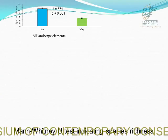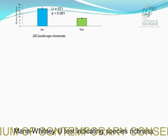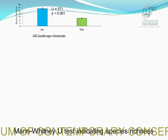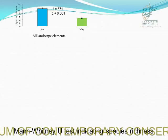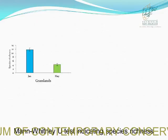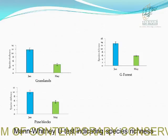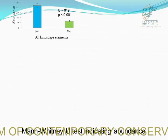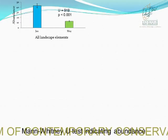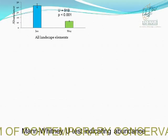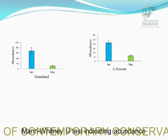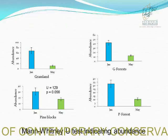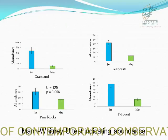We performed the Mann-Whitney U-test to test the effect of seasons on arthropod species richness, and the test indicated significant differences. We performed the same test for each of our four landscape types and found significant differences. We also tested the effect of seasons on abundance and again found significant differences, except in the pine blocks, where we found no significant seasonal differences.